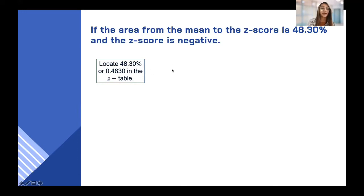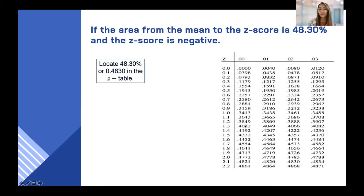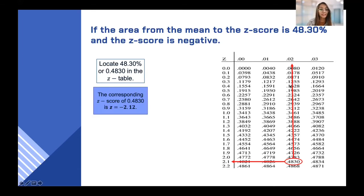Looking at the Z-table, we find 0.4830. The corresponding Z-value is 2.1 and 0.02, so that is 2.12. The corresponding Z-score of 0.4830 is Z equals negative 2.12 — it is negative because the problem states the Z-score is negative.